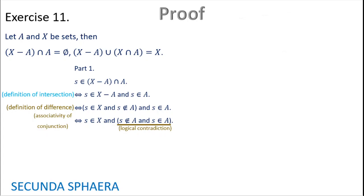Because this expression is always false, it can imply anything. Something useful to imply is that S is in the empty set. Moreover, S in the empty set is itself a logical contradiction — always false by definition of the empty set. Because this is a logical contradiction, we can imply the statement above and go back. We now have an argument connected by equivalences that starts with S in one set and ends with S in another set. Therefore, by definition of equality of sets, these two sets are equal.